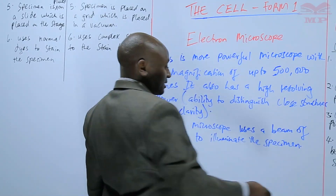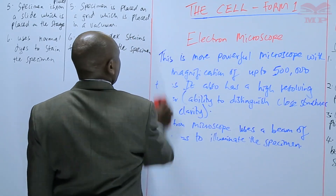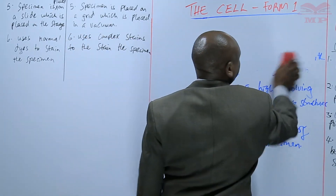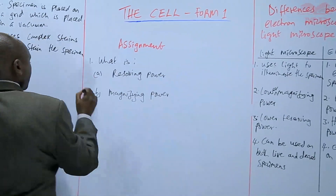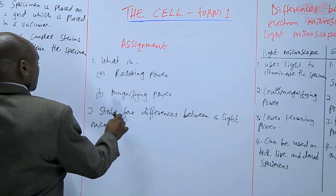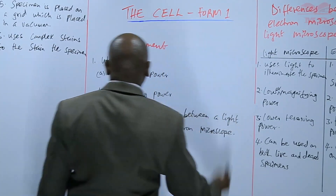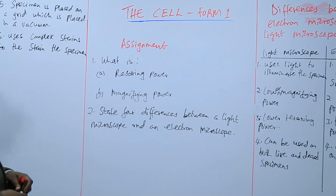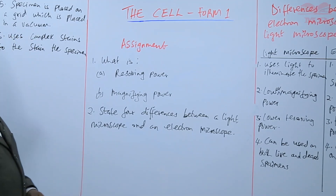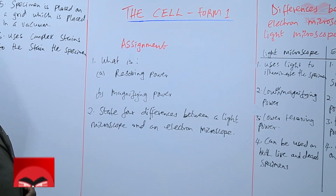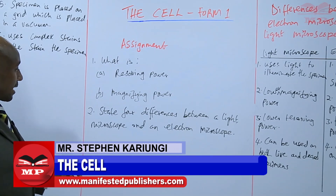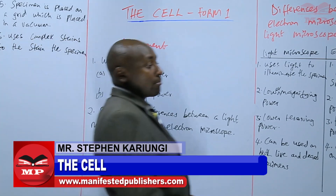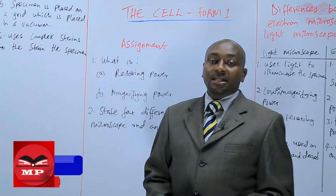The next thing we'll have is an assignment based on that. The first question is: what is resolving power and magnifying power? Question number two: state four differences between a light microscope and an electron microscope. We'll stop there until next time. Goodbye.